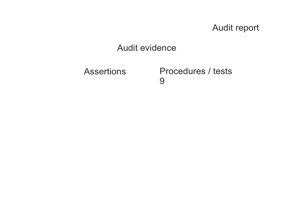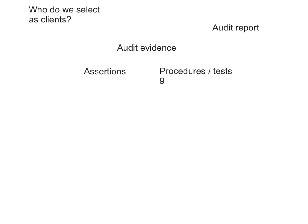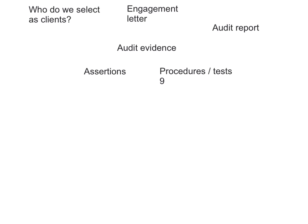What we learned last week is that we need to think about who we select as clients. Our clients — we eventually sign a contract we've called an engagement letter. We also learned that one of the key things we need to do when we're selecting clients is understand the client under ASA 315. Let's join some of these things together.